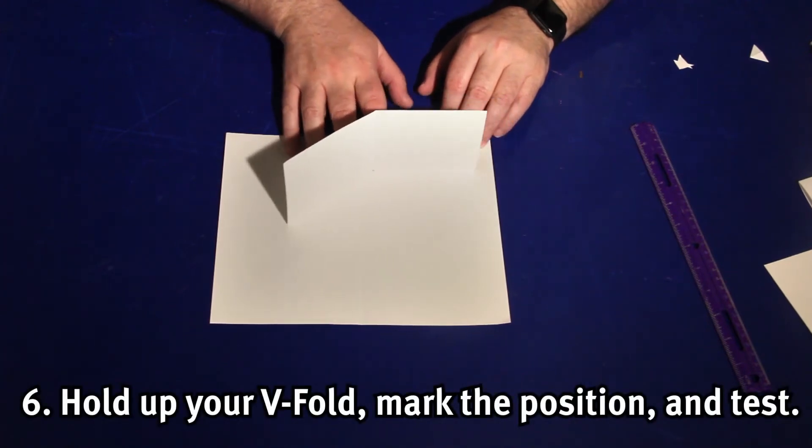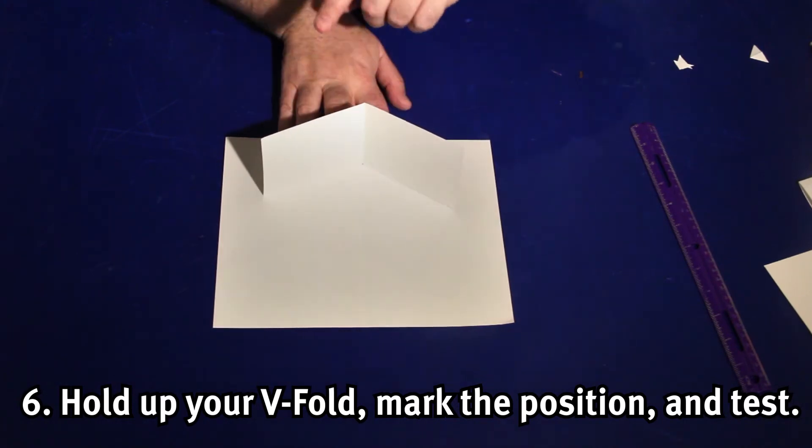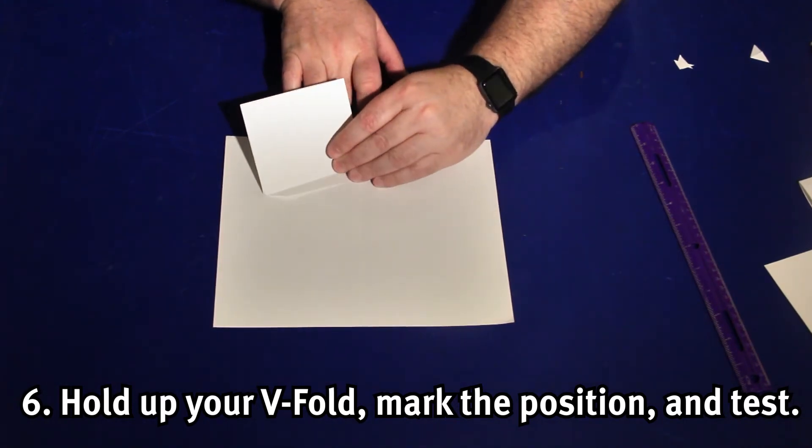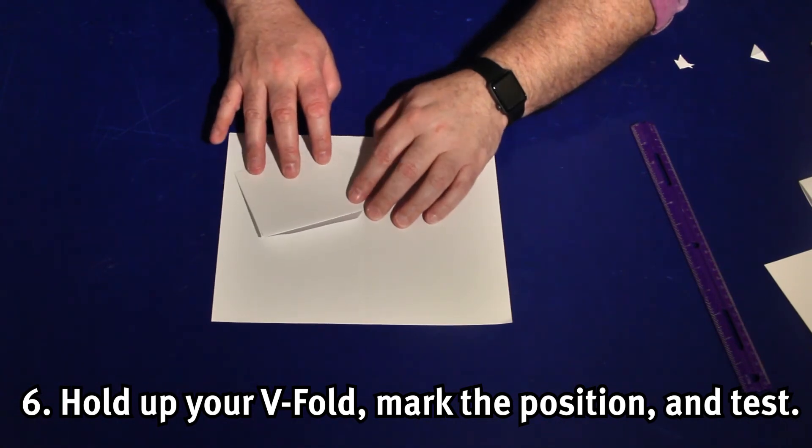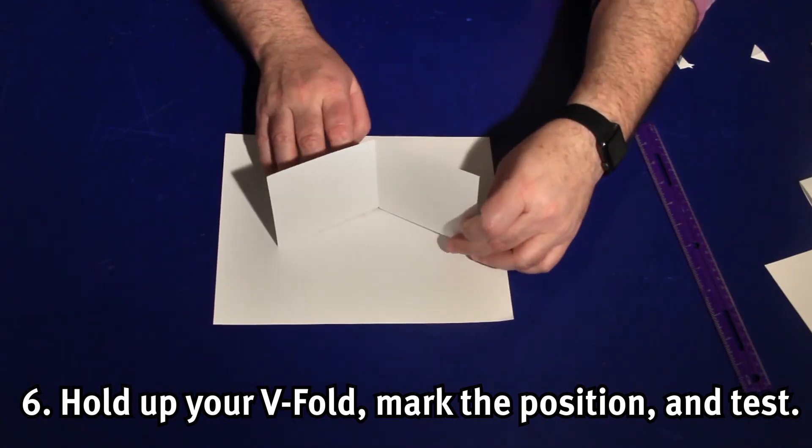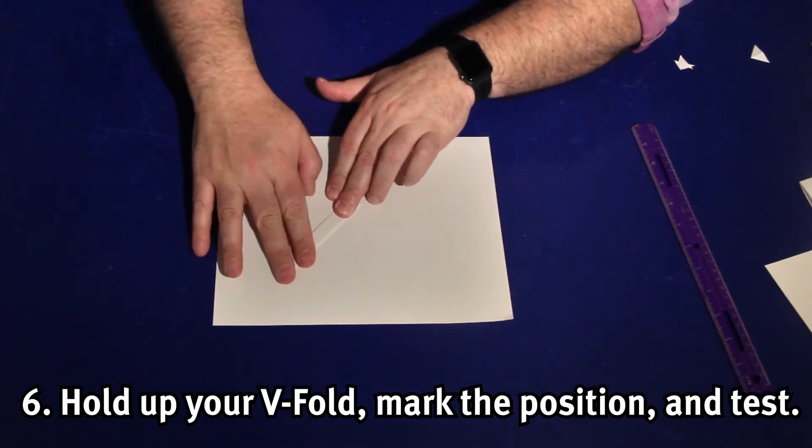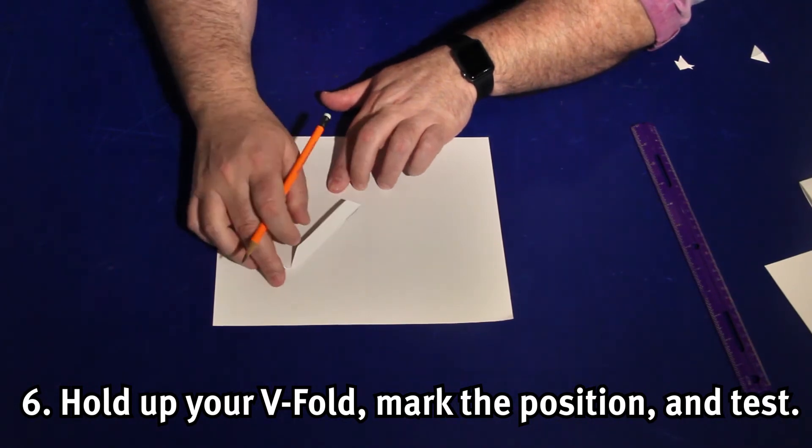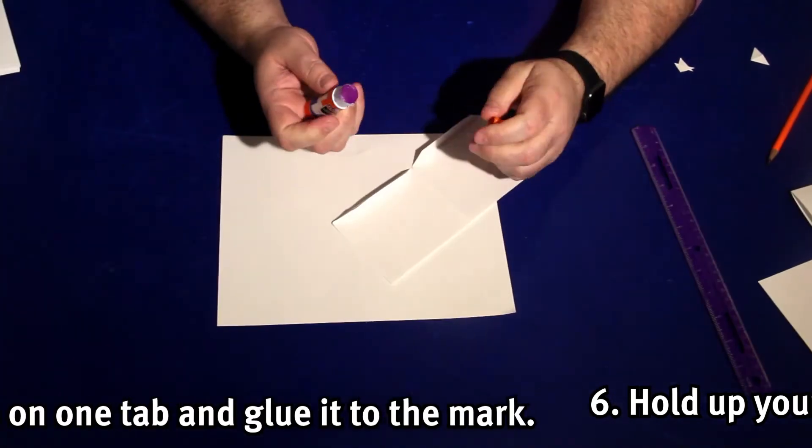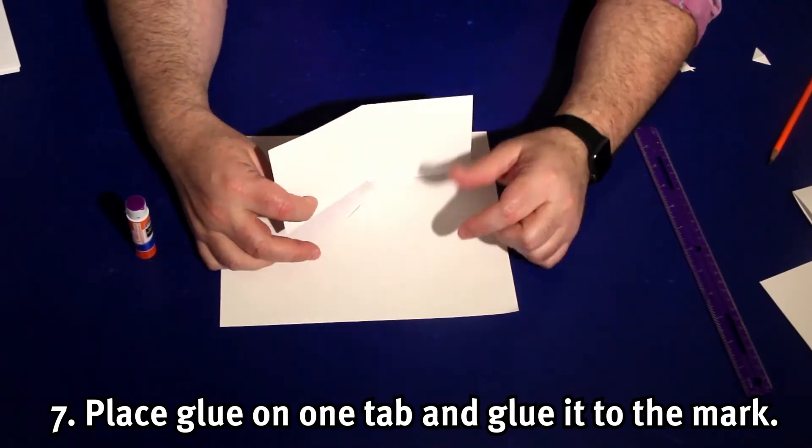With those three rules in mind, now we can glue on that V-Fold. Remember Rule 1. Hold up the V-Fold so its fold is over the base fold. Open it or close it as much as you like, then mark it with a pencil. Fold it flat and check to make sure it doesn't stick beyond the edge, unless you want it to. Keep in mind that V-Folds fold in the direction they are pointing. So, if you put it too far forward or too far backward, it will stick out the front or back when folded flat. Once you're happy with the location, put some glue on one tab and glue it to the side of the base.